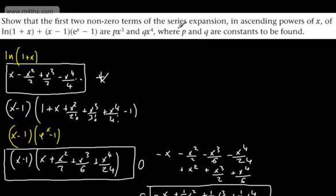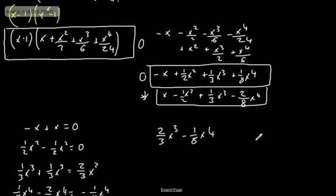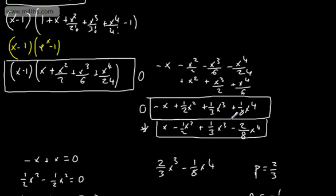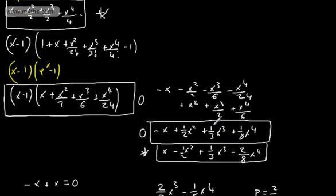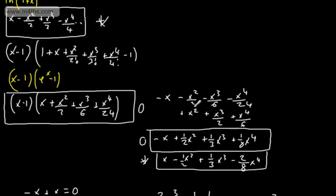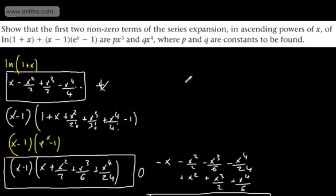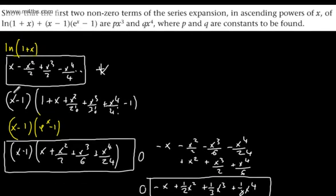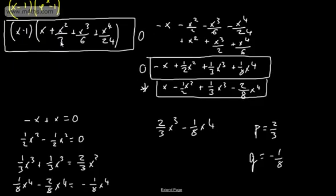So we can express this as 2 thirds x cubed minus 1 over 8 x to the fourth. Since they want it in the form px cubed plus qx to the fourth, we can say p equals 2 thirds and q equals minus 1 eighth. We've simply expanded using the standard expansions of ln(1+x) and e to the x, then multiplied through, collected up, and added it all together.